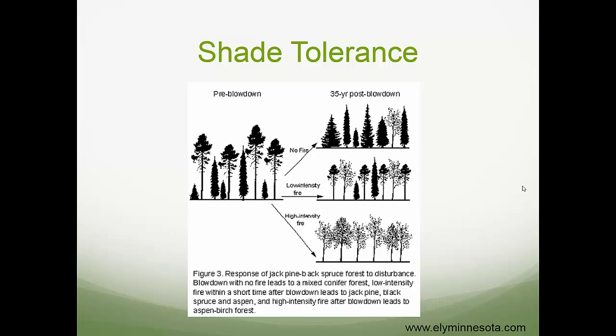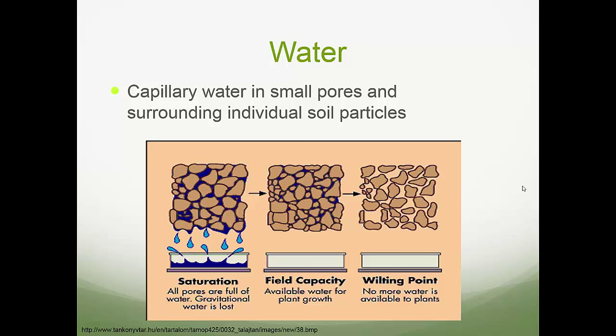Shade intolerant species need a lot of sun and are not able to tolerate shade. Shade tolerant species can tolerate lower levels of sunlight. All plants need sun — it's just a question of what level of sunlight they prefer or can take advantage of.